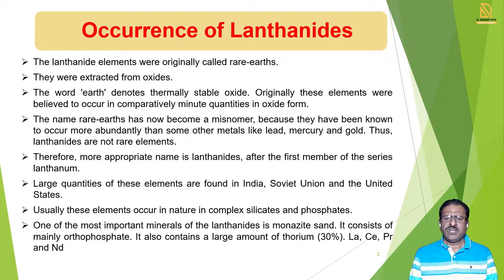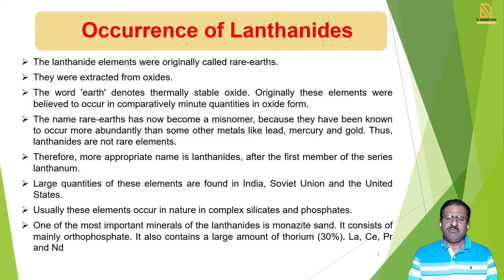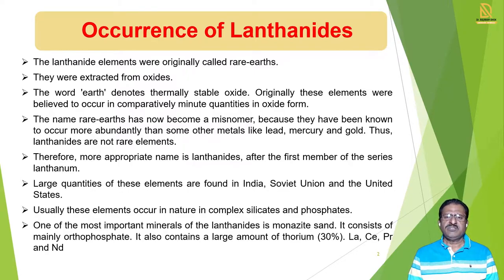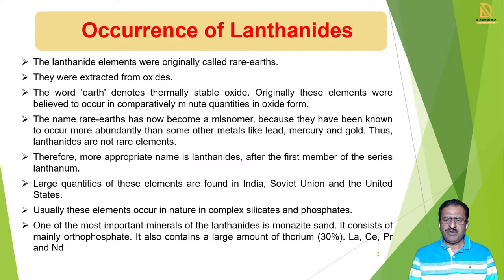But nowadays, various technologies are developed, and with the help of different principles we can separate them. Now we find that lanthanide elements are present in large quantity. So this name 'Rare Earth' has now become a misnomer because these elements are present in the Earth's crust in large, abundant quantity. If we see some metals like Lead, Mercury, and Gold, these metals are in smaller quantity, while lanthanide elements are present in larger quantity than Gold and Mercury.